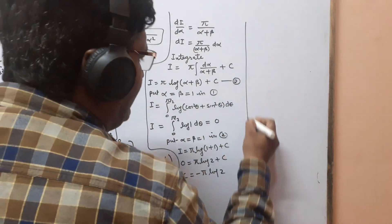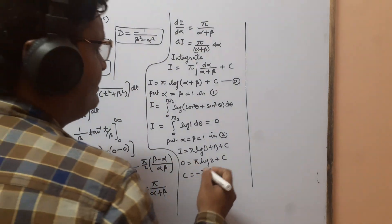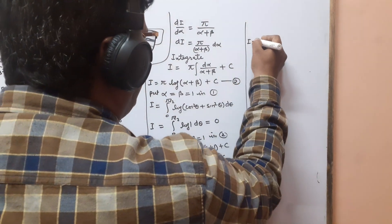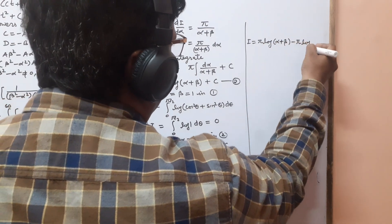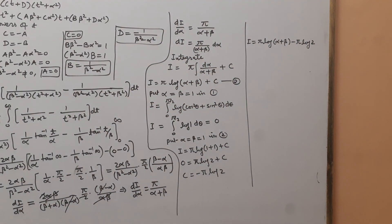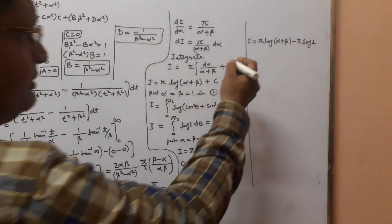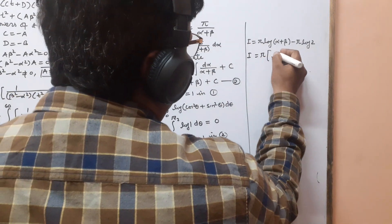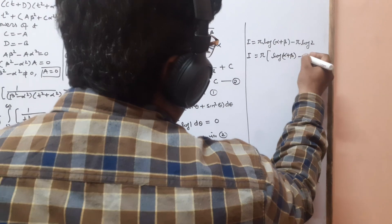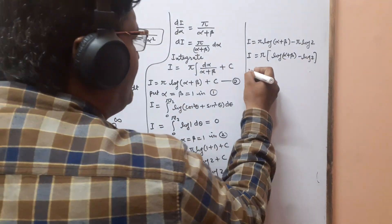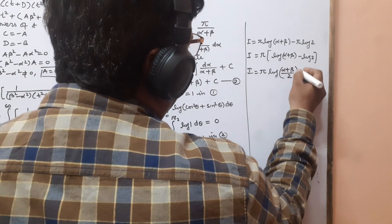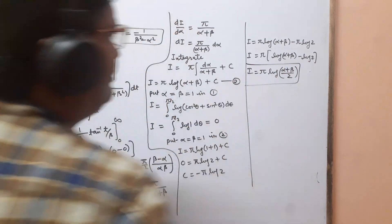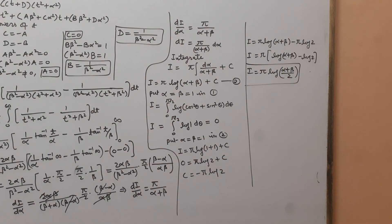Putting the value of C back into equation 2: I = π·log(α + β) − π·log 2. Taking π as a common factor and using the logarithm property log(a) − log(b) = log(a/b): I = π·log((α + β)/2). This is the value of the given definite integral.